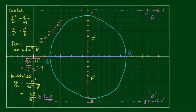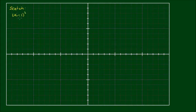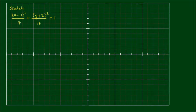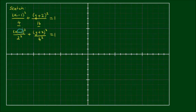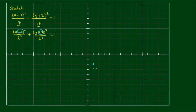Let's do a final example that is not centered at the origin. Sketch the curve x minus 1 all squared on 4 plus y plus 2 all squared on 16 equals 1. The first thing to do is write the denominators as squared numbers: x minus 1 all squared on 2 squared plus y plus 2 all squared on 4 squared equals 1. These numbers offset the center of the ellipse from the origin — this ellipse is offset by positive 1 in x and negative 2 in y, giving a center point at (1, −2). The ellipse has a semi-major axis of 4.